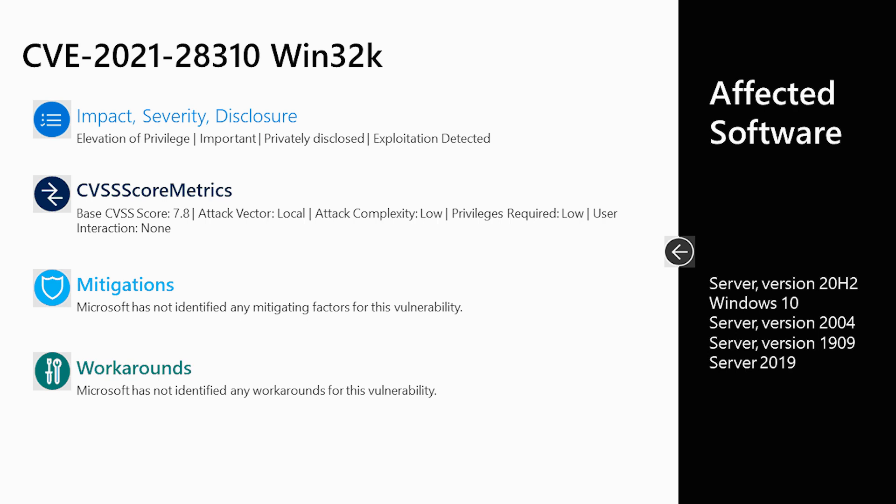The first vulnerability we will cover this month is CVE-2021-28310. This is a Win32K elevation of privilege vulnerability, listed as important and known to be exploited out in the wild. The base score on this is 7.8 out of a scale of 10. We don't have any IOCs to share because we haven't seen any evidence of exploitation in our own telemetry. However, the key here is to install the update and you will be protected — no extra steps required. Update Windows and you are protected.